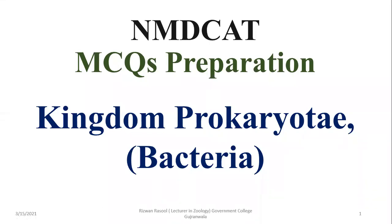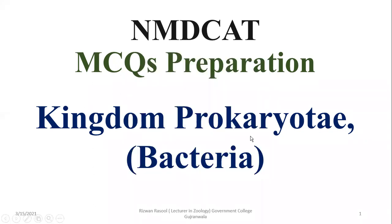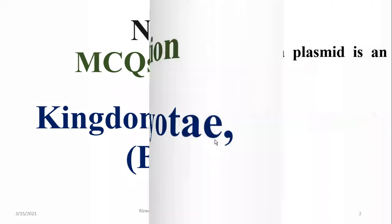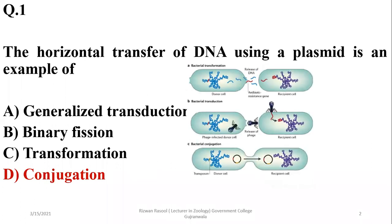The next topic for MCQs discussion is Kingdom Prokaryote or Bacteria. These MCQs are important for the preparation of all types of MCQ-based exams, especially MDCAT. Question number one: the horizontal transfer of DNA using a plasmid is an example of conjugation, which occurs between the same species. That is horizontal gene transfer, so the right option is delta.